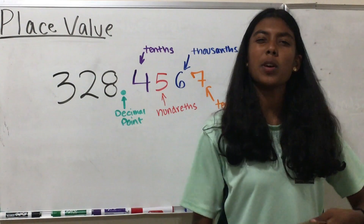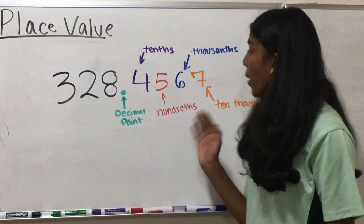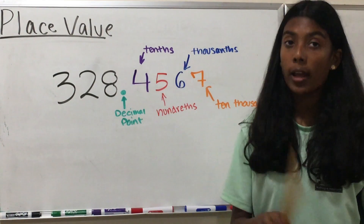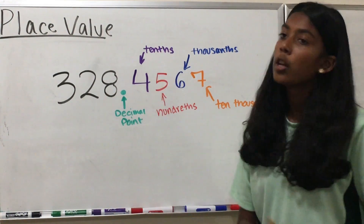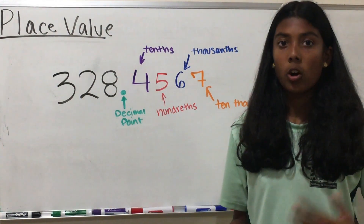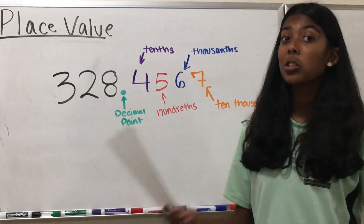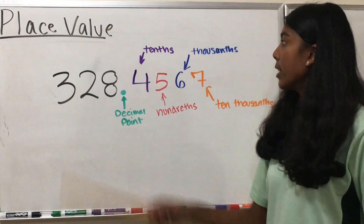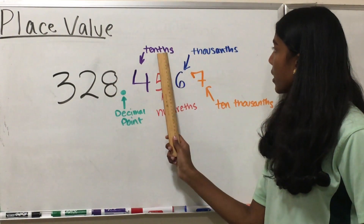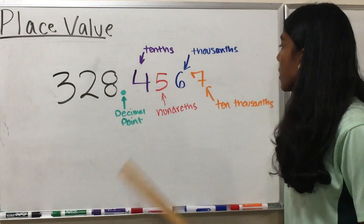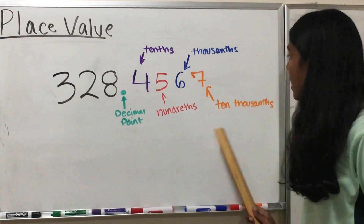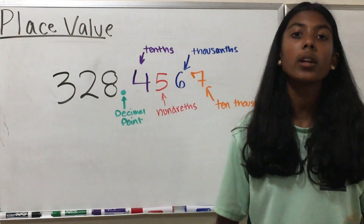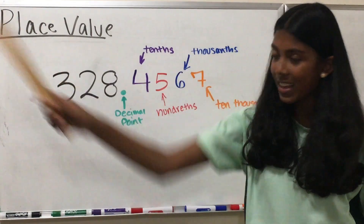Now let's talk about place value to the right of the decimal. This is our decimal point. Immediately to the right, we have our tenths. Do not confuse it with our tens because they're completely different — one is to the left, one is to the right. You can notice the difference with the 'th.' Then we have our hundredths, thousandths, and so on. You don't want to confuse them with the ones to the left side.